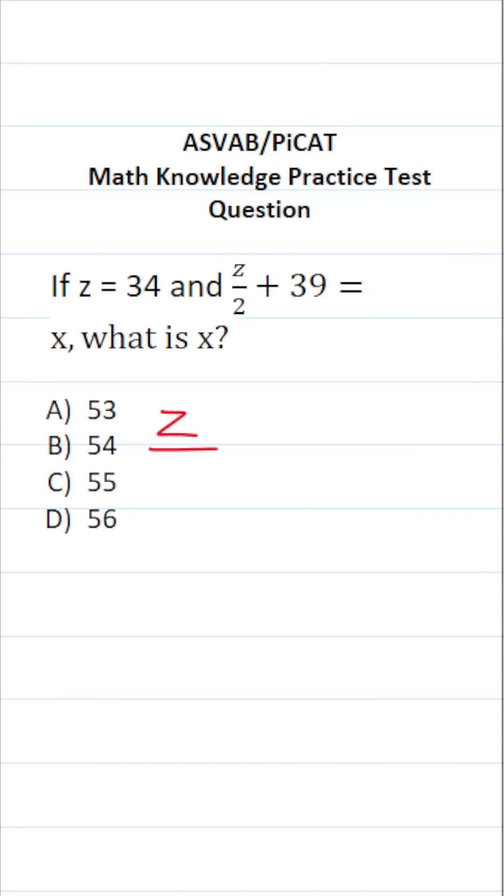On the ASVAB and PiCAT, you're not given a reference sheet or a calculator. So you want to get in the habit of copying things down and working them out on your own scratch paper.